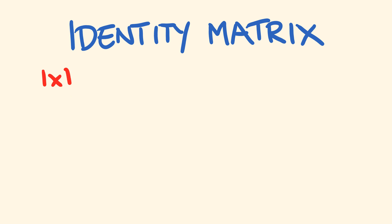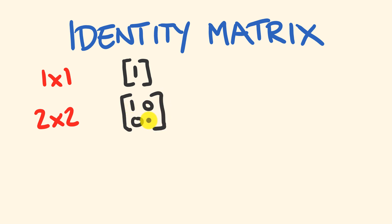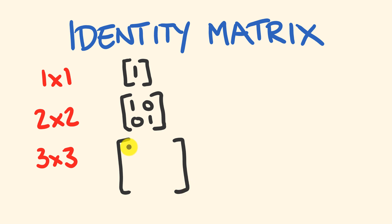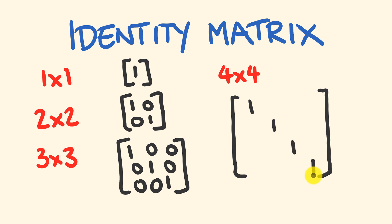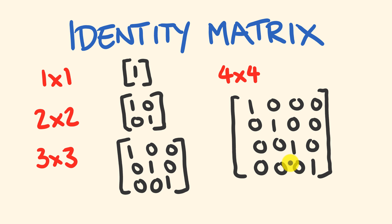For a one by one matrix, the identity matrix is just a single row, single column with a one there. For a two by two matrix, it's a one, zero, zero, one — the ones go down in a diagonal. For a three by three square matrix, the identity matrix is three by three with a leading diagonal of ones and the rest all zeros. No surprise, a four by four identity matrix has four columns and four rows with ones along the diagonal and the rest all zeros. If you were to multiply another three by three matrix with this, it would remain unchanged.